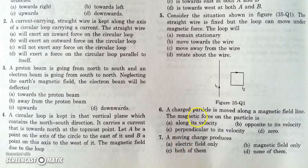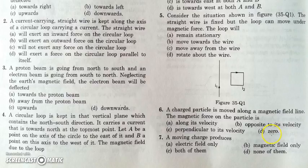The sixth question is quite easy. If a charged particle moves along a magnetic field line, it will not experience any magnetic force because the velocity will be either parallel or anti-parallel to the magnetic field. So V cross B will be zero, and hence the magnetic force will also be zero.